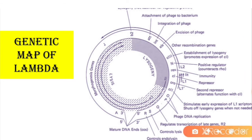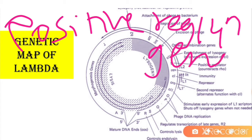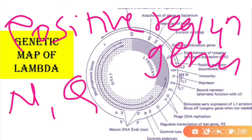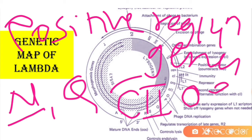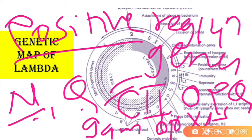The positive regulation genes are N and Q. These are positive regulation genes whose products increase the rate of transcription of other genes. The product of the N gene stimulates transcription of genes like cII, O, P, Q, gam, bio, and xis, among others.